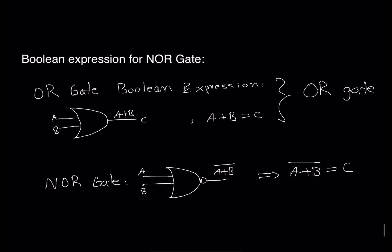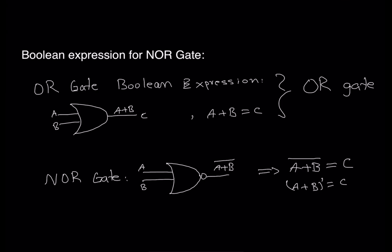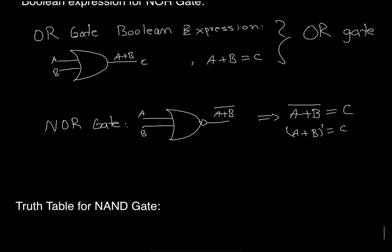This expression can be written as A plus B with a bar above it — that's the written version. If you were typing it in a computer it would be written differently. So those are two ways to write the NOR gate Boolean expression. The bar above A plus B means NOT, so that will be NOR gate, or NOT OR gate, equal to the condition giving output C.